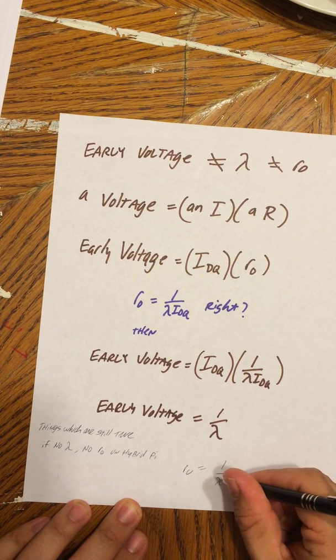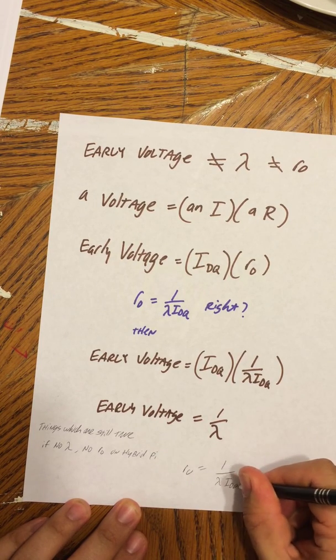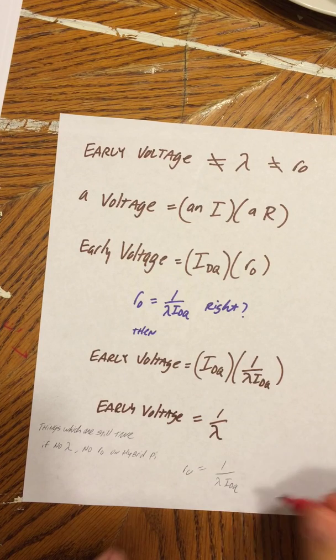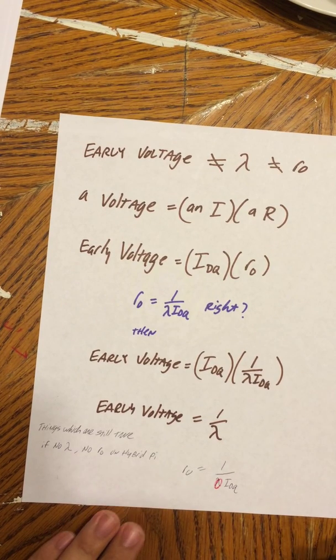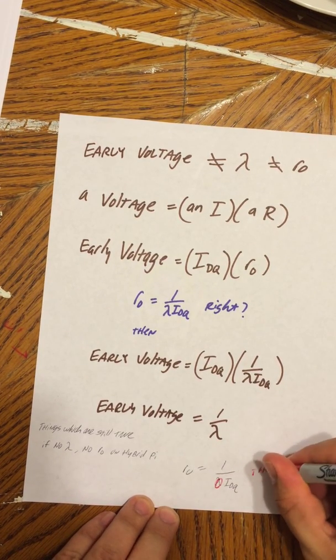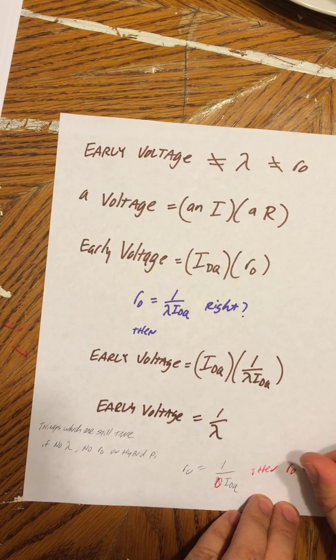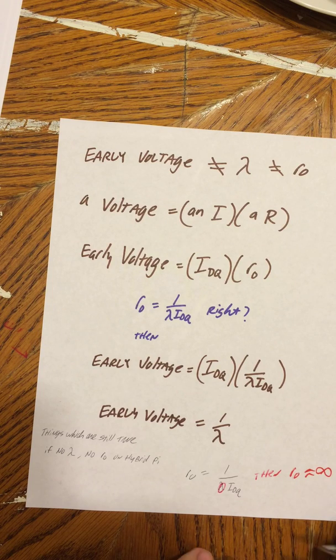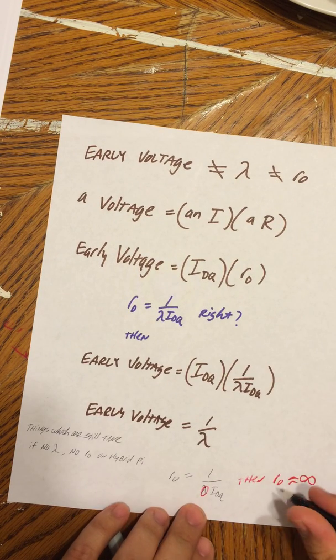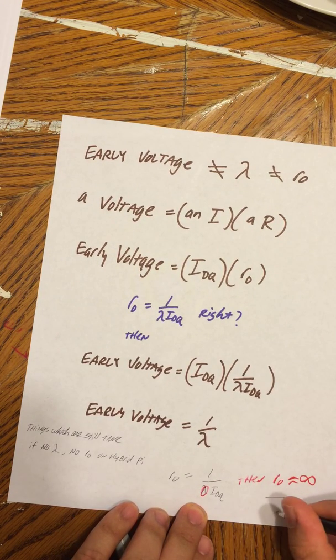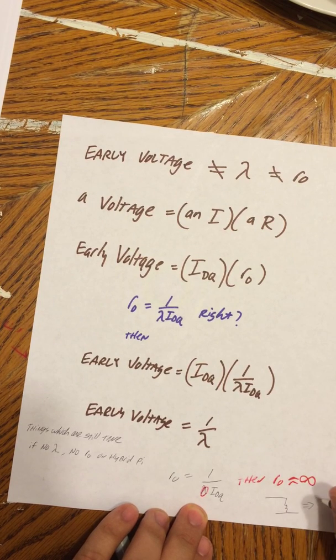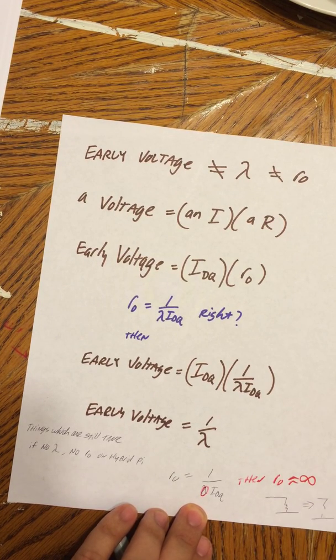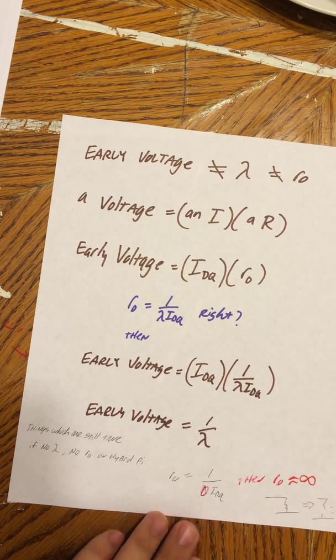So we'll let lambda be zero. Okay, so now we have 1 over 0. Then RO is close to infinity. So then, I guess, infinite resistance. It's open. It's broken. So it's not on there.